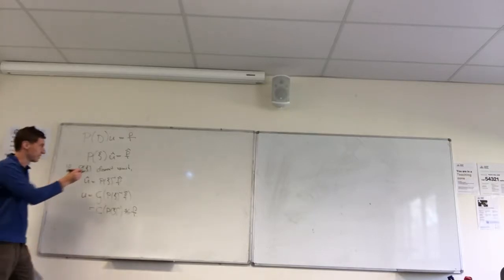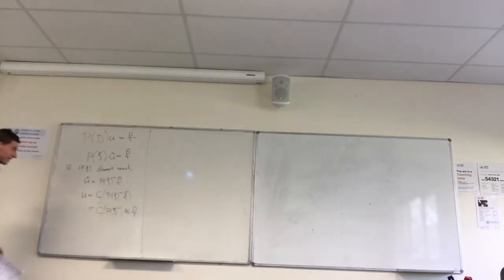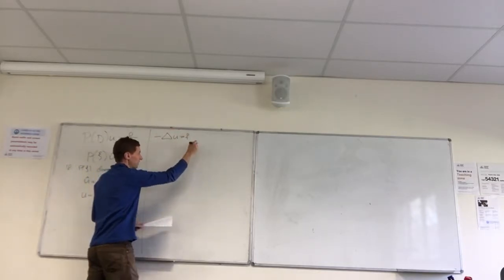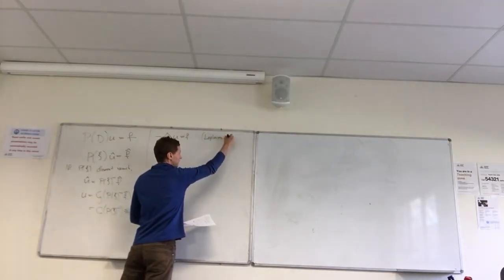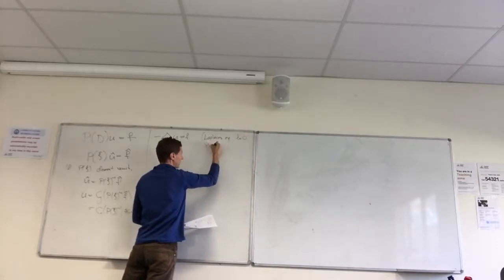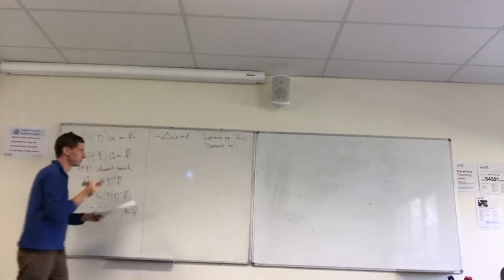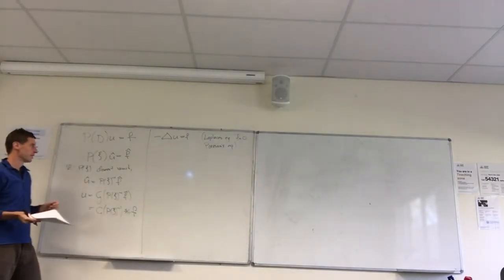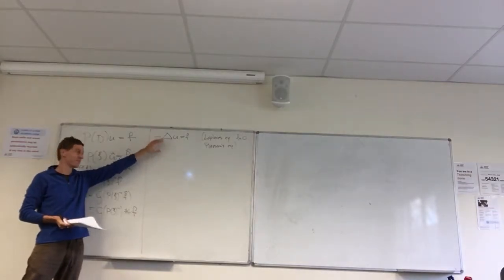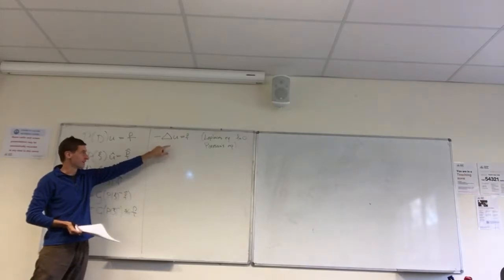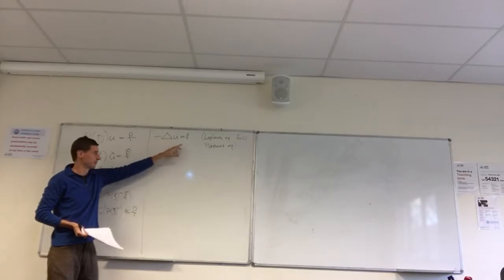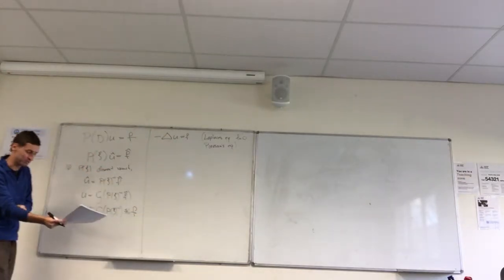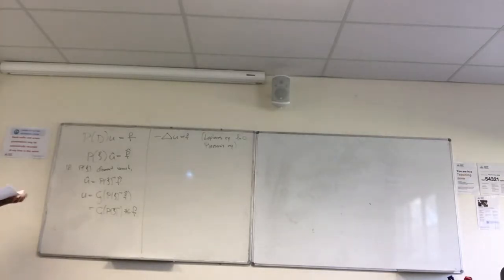Now let's go back to the first half of this section of notes and see how this idea works in a more difficult setting. We want to solve Laplace's equation - this is called Laplace's equation when f equals zero, Poisson's equation in general. This turns up everywhere in physics: finding electric fields with a specified charge density, fluid flow, heat distributions - it's an extremely pervasive equation all across physics.